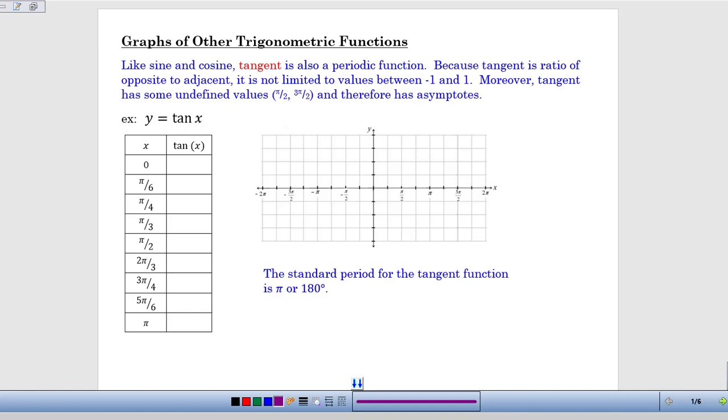Previously we've graphed sine and cosine, so now we're going to graph the other four trigonometric functions: tangent, and then all of the reciprocals, cotangent, cosecant, and secant.